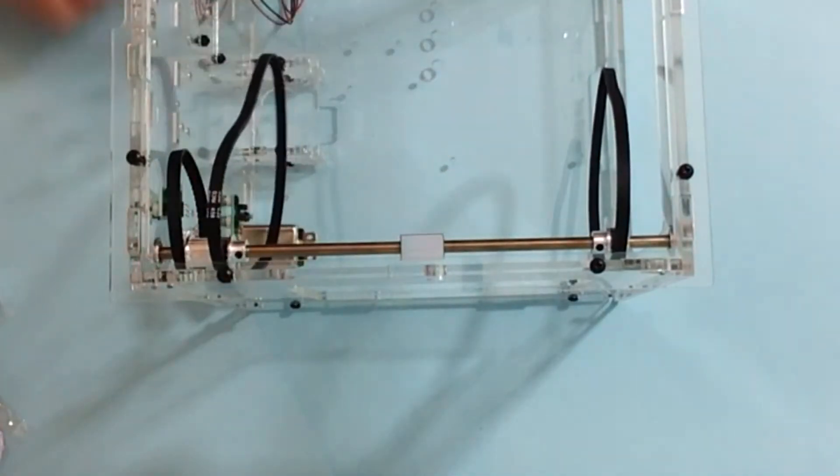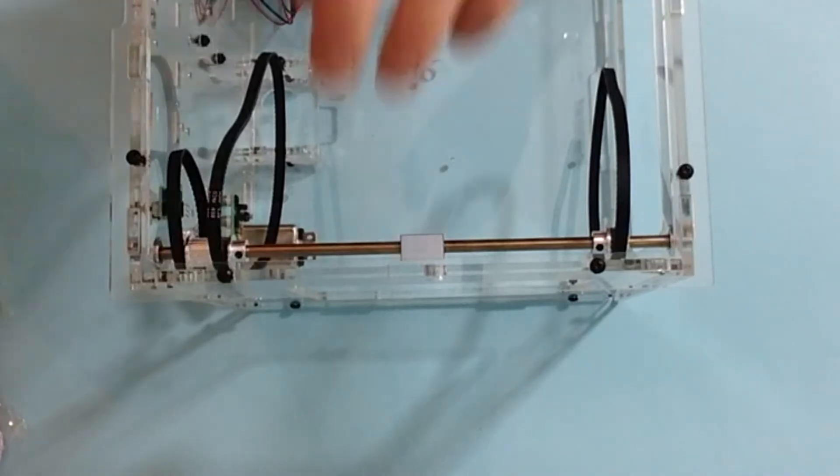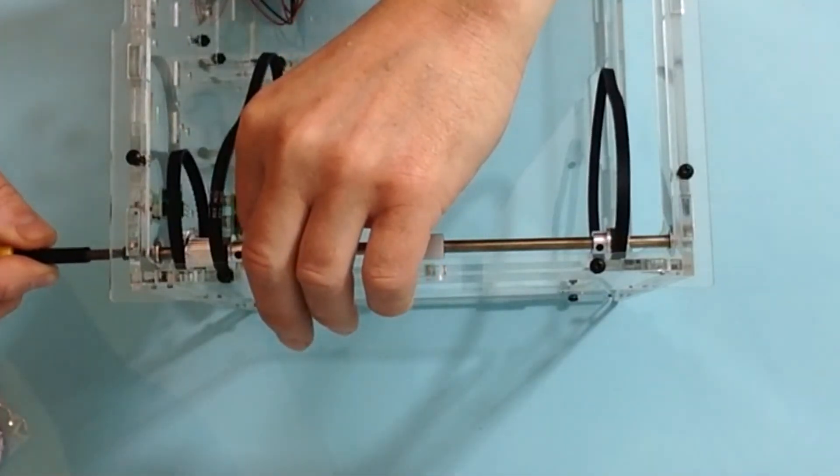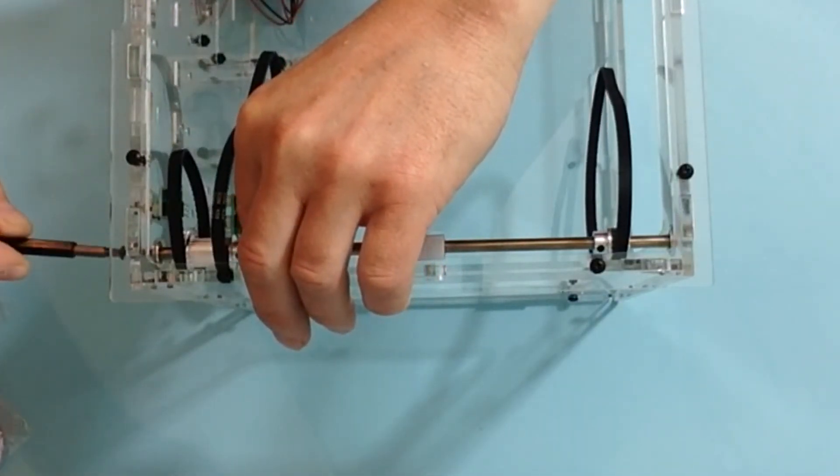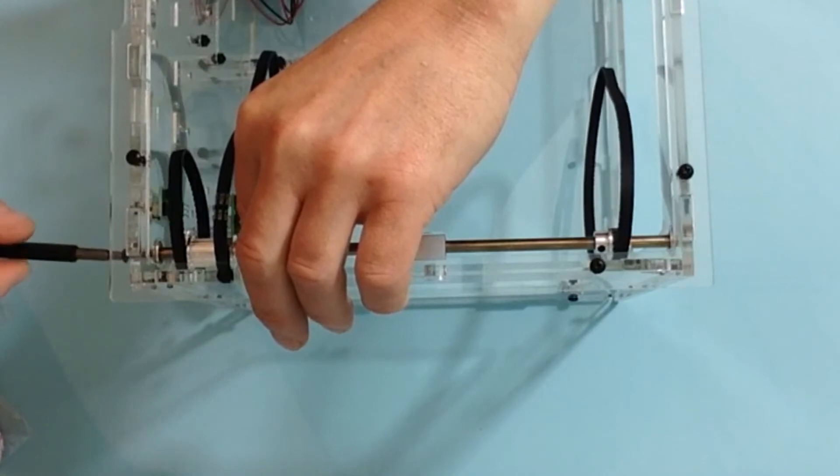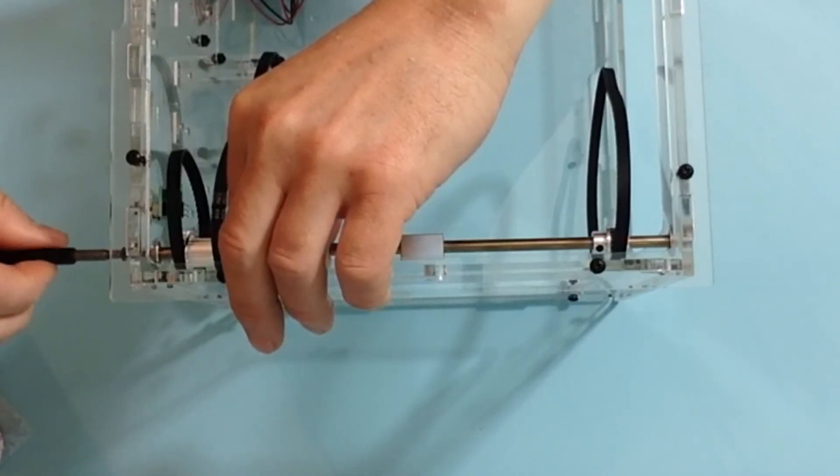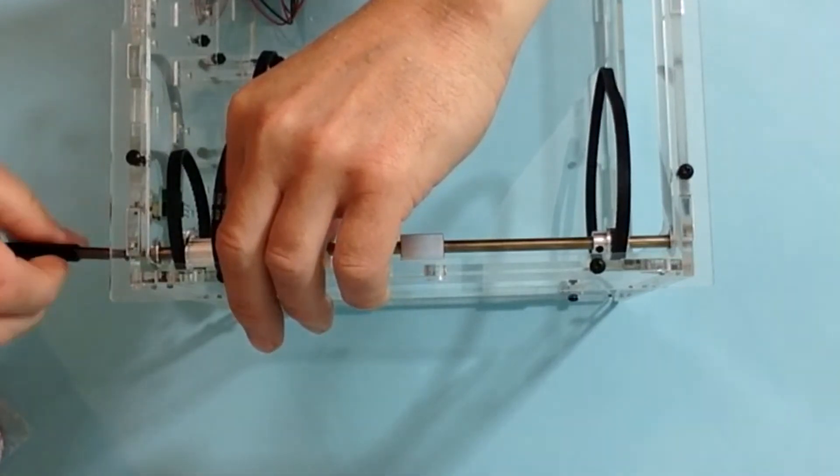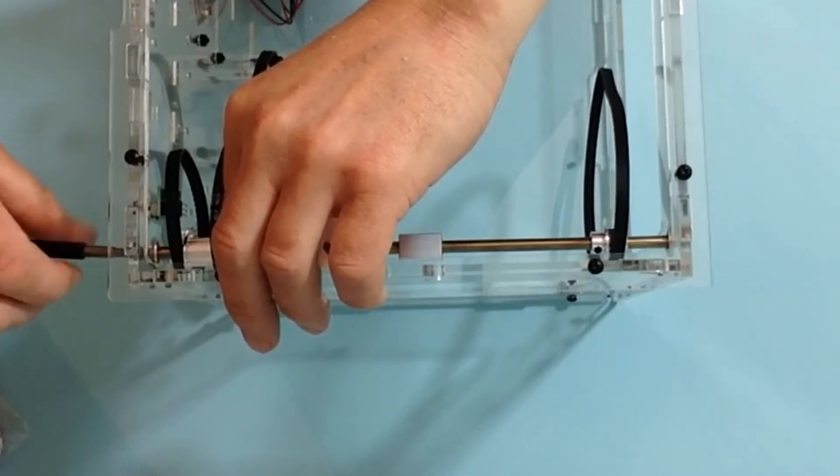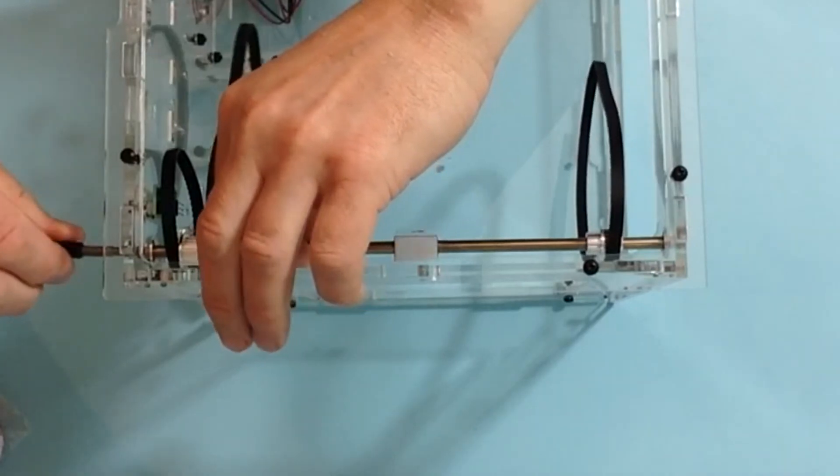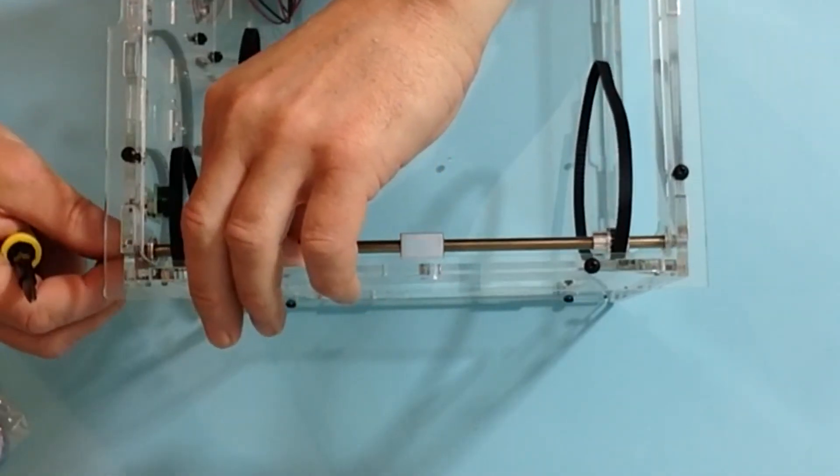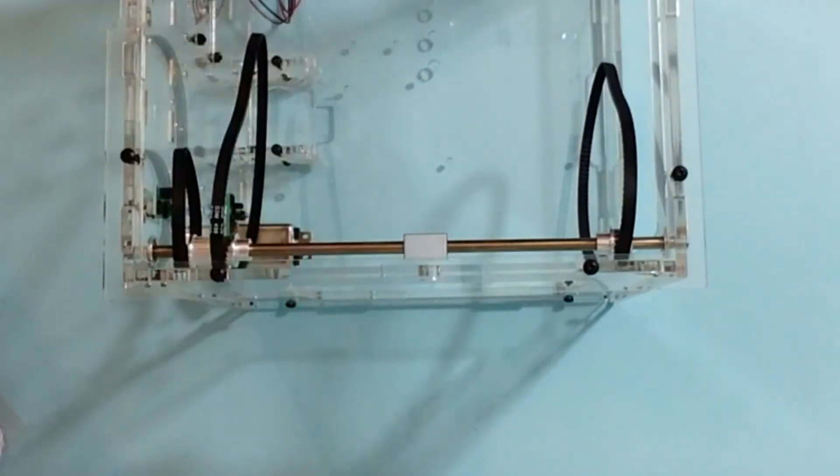Take the other shaft and the other screw, and then once again gently screw that down into position so that it keeps the bearing nice and taut.